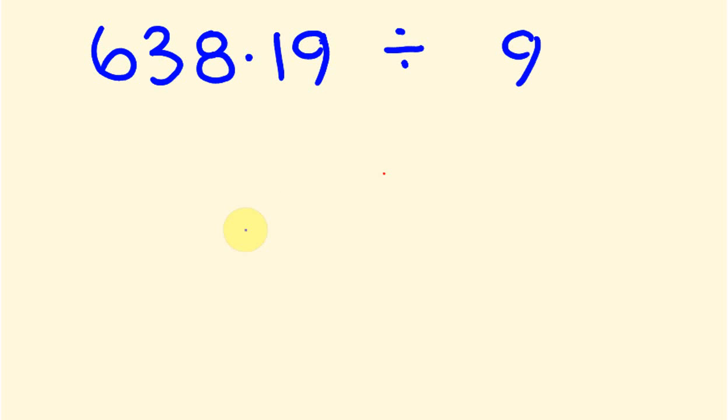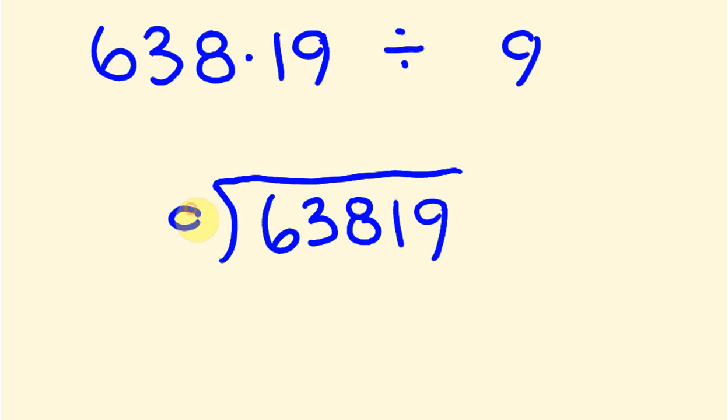Let's write this out as usual: 63819 and we're going to divide that by 9. So let's start putting in our answer here. 9 into 6 we can't do, 9 into 63 or 7 nines of 63 so it's a seven there. 9 into 8 we can't do so we have to put a zero there and carry the 8. 9 into 81 goes nine times and 9 into 9 goes once so we have this answer of 7091.